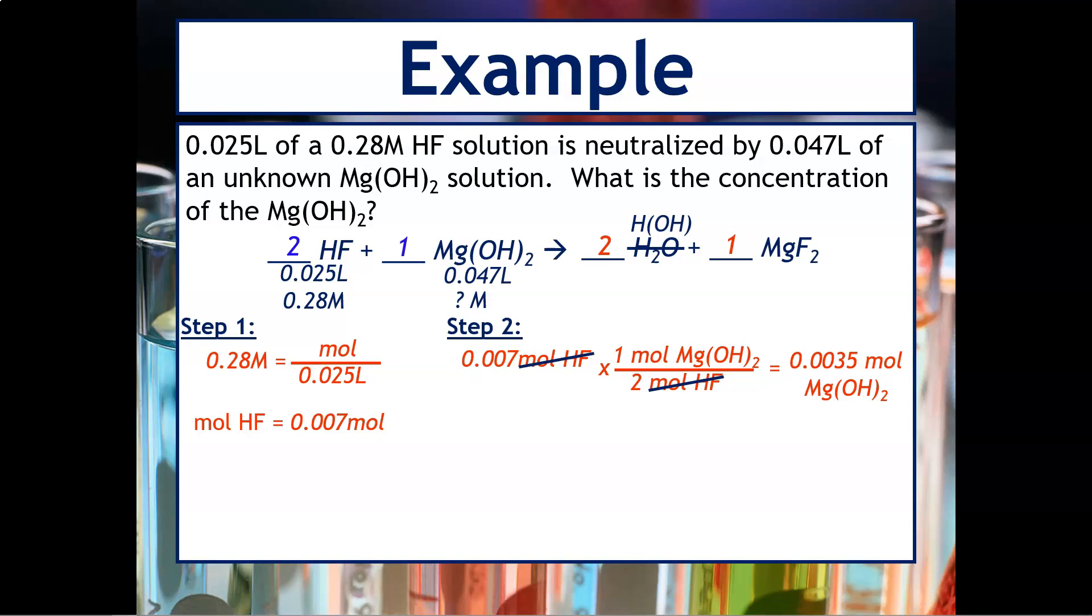But we don't want the amount of moles. Instead, we want the concentration of the magnesium hydroxide. And so that's why the last step is to say, well, if we have 0.0035 moles of it, if we divide it by the amount of volume that we added, we can then figure out what the original concentration was. And there it is 0.074 molar.